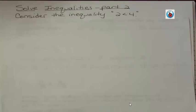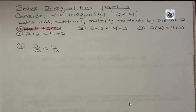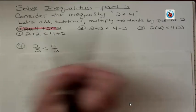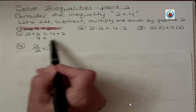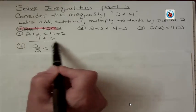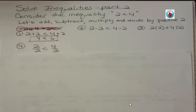So consider the inequality 2 is less than 4. Let's add, subtract, multiply, and divide by positive 2 and see what happens. Sorry about the mistake there. If I take 2 and add 2, I get 4, and 4 and add 2, I get 6. Do you agree with me that 4 is less than 6 is a true statement? So I can add positive number to both sides of an inequality, and I still have a true statement.